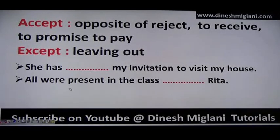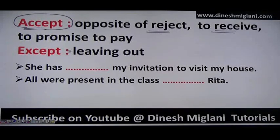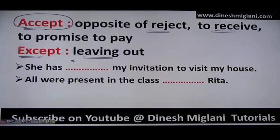Let us start with session number one. First of all we have two words: 'accept' and 'except.' Accept means the opposite of reject, or to receive something, or to promise to pay something — so we say 'he accepted me,' meaning to receive. The second word, except, means leaving out — for example, 'I hate all the students except one' means leaving out that particular person.